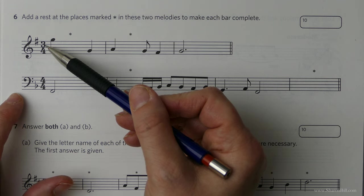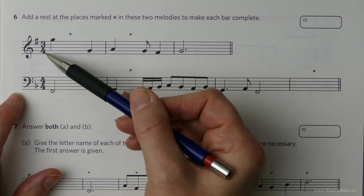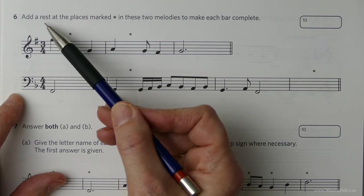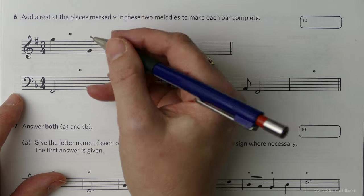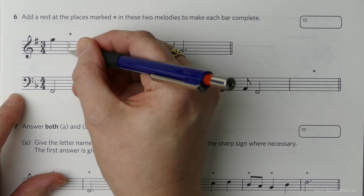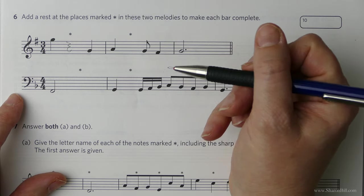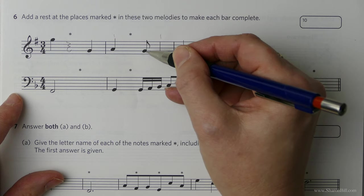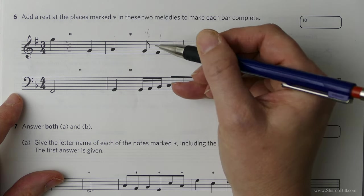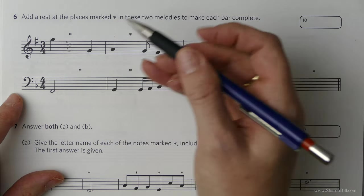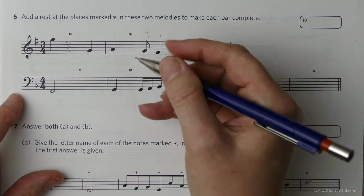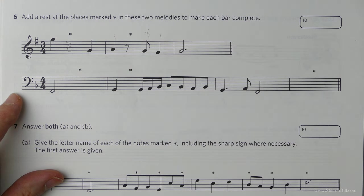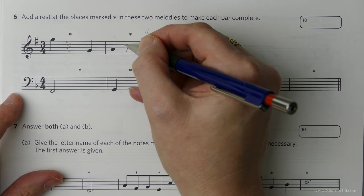So here we should have 3 beats per bar, 3 crotchet beats, 3 quarter notes. We have 1, 2 beats with 1 beat missing and we need to place a rest to show silence of that value and this is a 1 beat rest, a crotchet rest. So in the next bar we have 1 beat here, we have 1 beat here and we have half a beat here. So we've only got 2 and a half, we should have 3 so we have half a beat missing and so that's the half a beat rest, a quaver or an 8th note rest, like a number 7 with a little blob on the end.